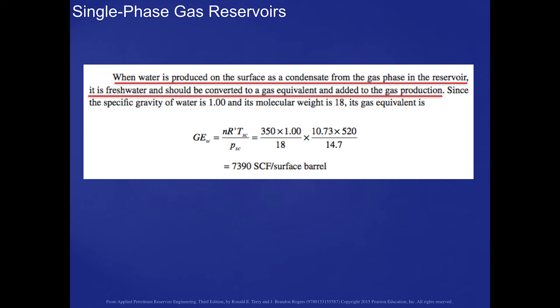When water is produced on the surface as a condensate from the gas phase in the reservoir, it will be fresh water. If water produced on the surface has some salt concentration, it likely comes from the connate water that was initially in the reservoir. If it's fresh water, we need to account for that volume of water in the gas phase. This slide shows the equation to calculate the volume of any moles of fresh water produced on the surface to its gas equivalent at standard conditions.